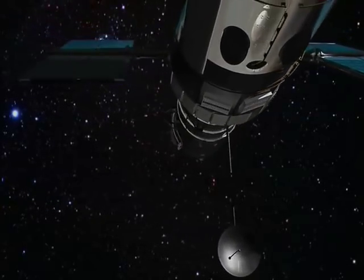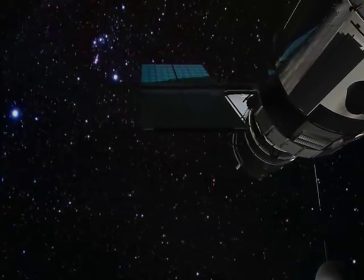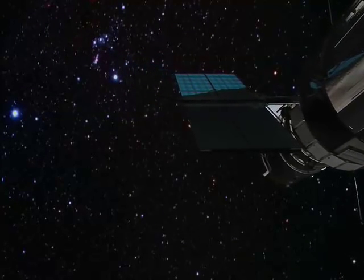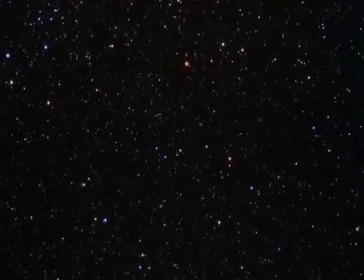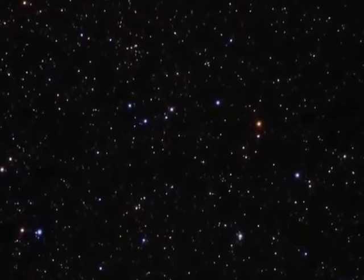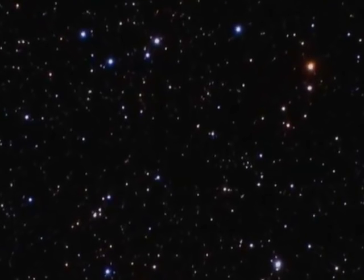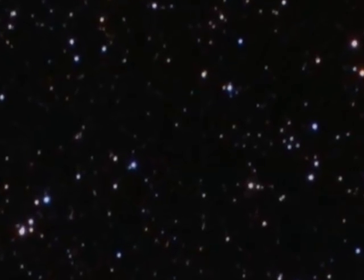Later, in September of 2003, the Hubble did it again. This time, it looked at another unremarkable section of sky and stared at it again for a little over 11 days. They used improved detectors with different filters and this time, they saw this.